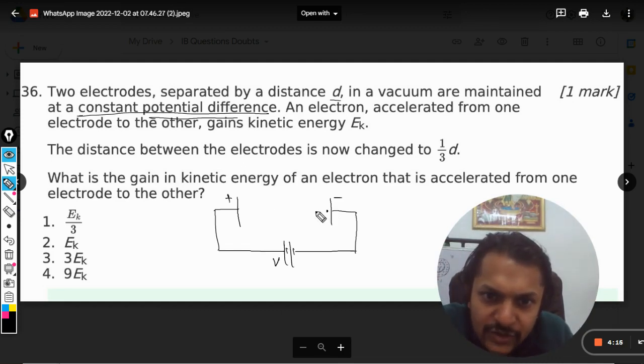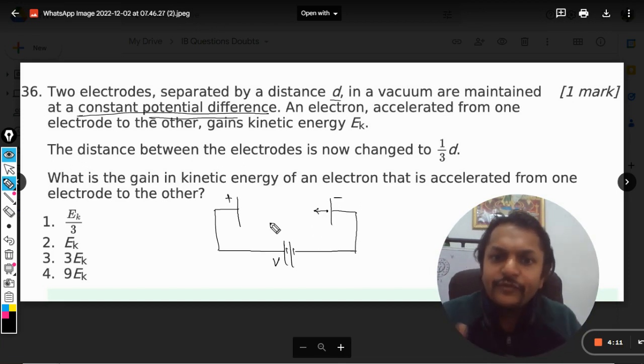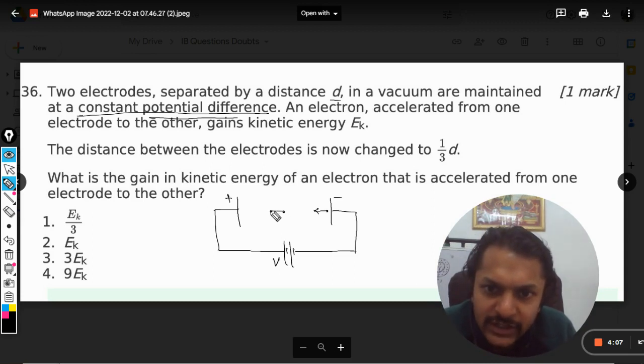Now there is this one electron and it is free to move, so it will move from negative side to the positive side. Obviously a force is acting on it, like q into e, that force will be acting.